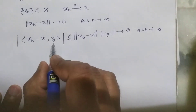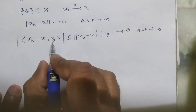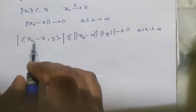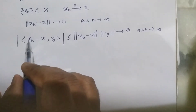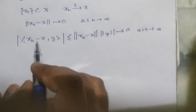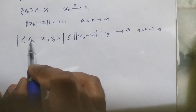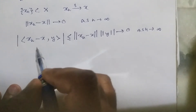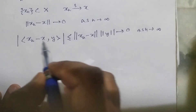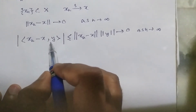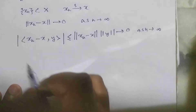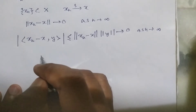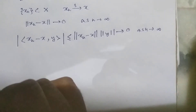We use the property of y, so that the inner product of xn and y converges to the inner product of x and y. This proves the theorem — strong convergence implies weak convergence.